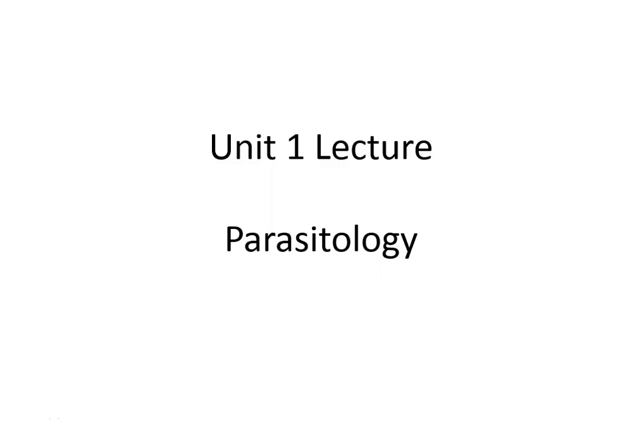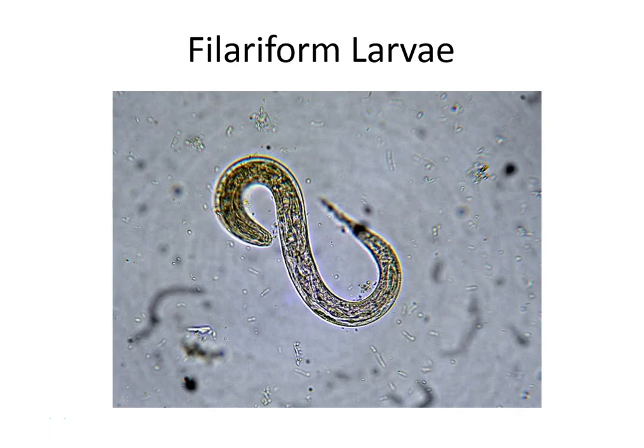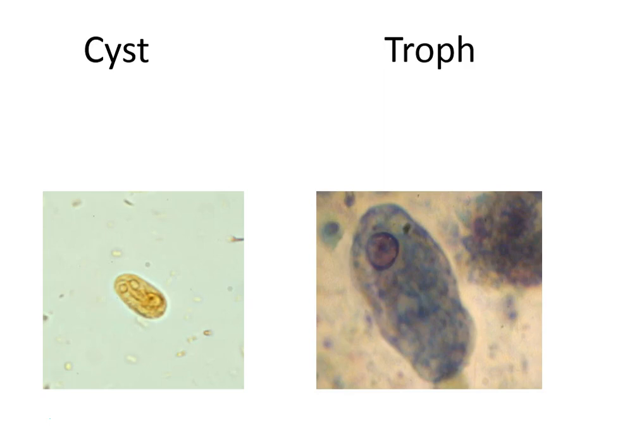We're going to review for the exam. On the first page there are some terms you probably know. You remember what an obligate parasite is — that's the one that has to have a host in order to survive. You need to know the different forms: what a cyst is and what a troph is. The cyst indicates an inactive infection, but the troph is an active infection.